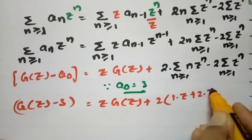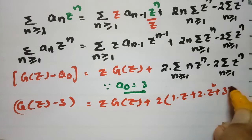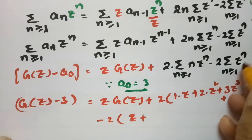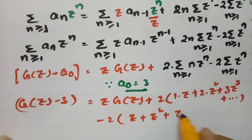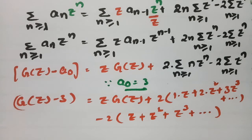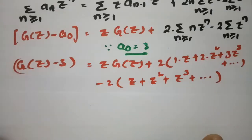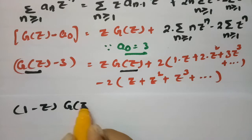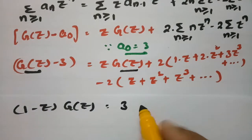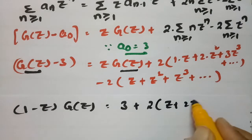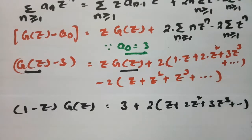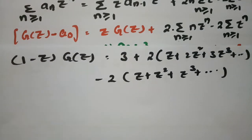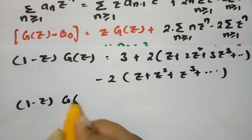Continuing the expansion: if n=1 this is z, n=2 gives z², n=3 gives z³, and so on. Taking G(z) common, we get (1 − z)·G(z) = 3 plus 2z times (1 + 2z + 3z² + ...) minus 2 times (z + z² + z³ + ...). This is 3 plus the expansion recognizable as (1−z)⁻² and (1−z)⁻¹ forms.